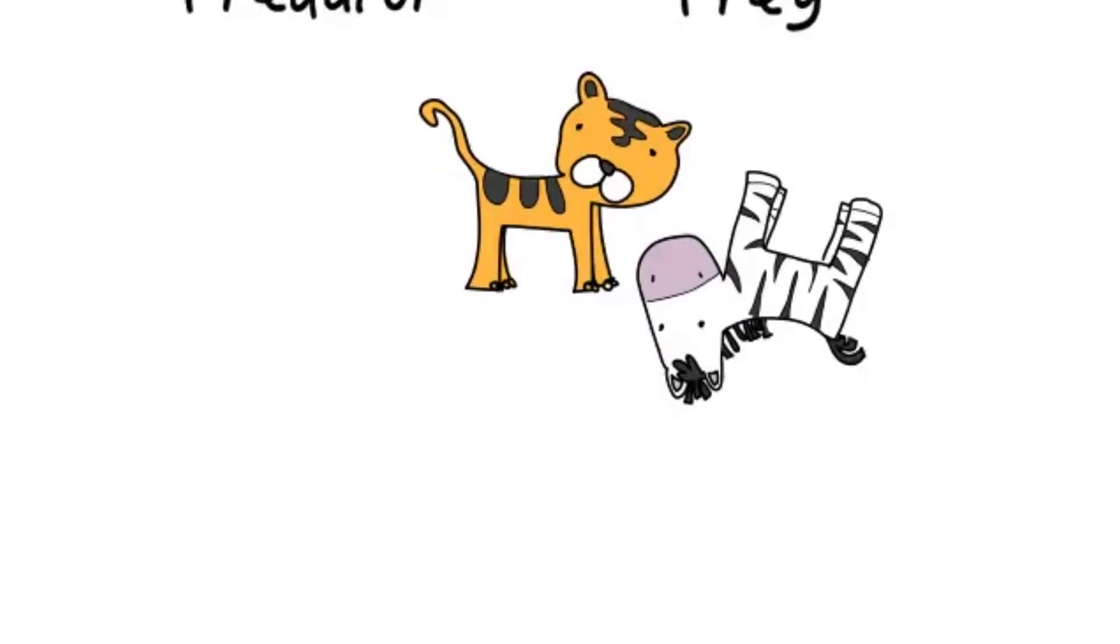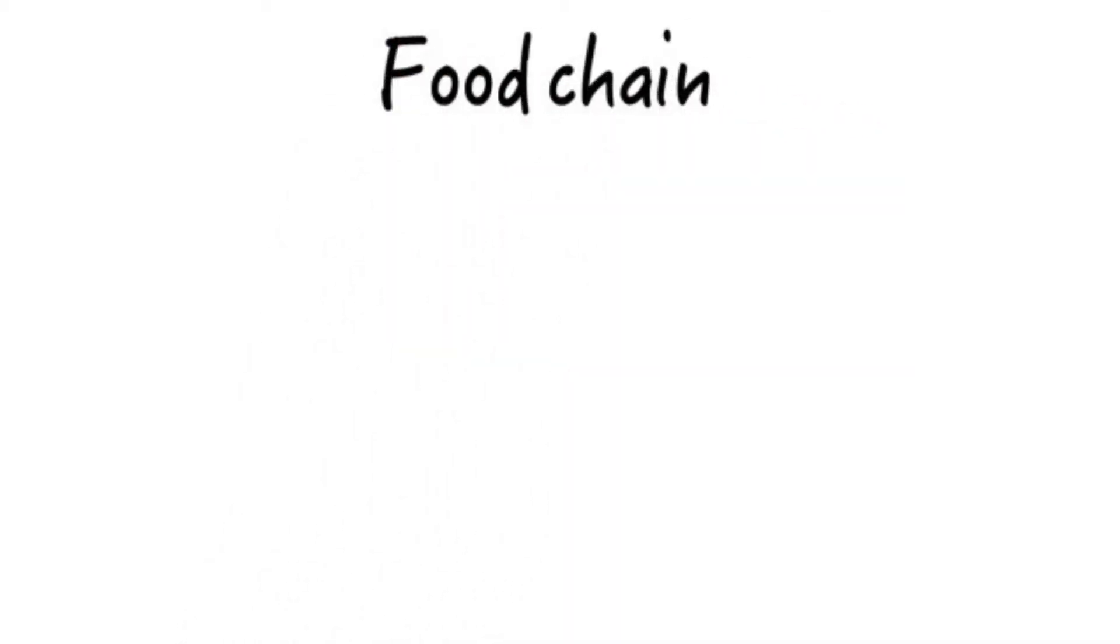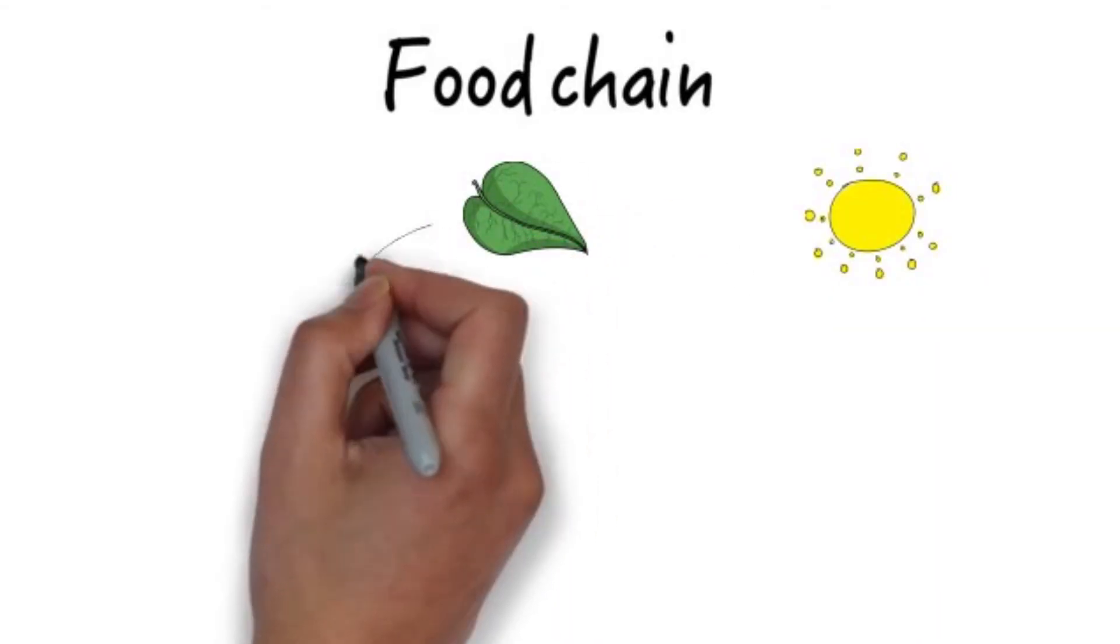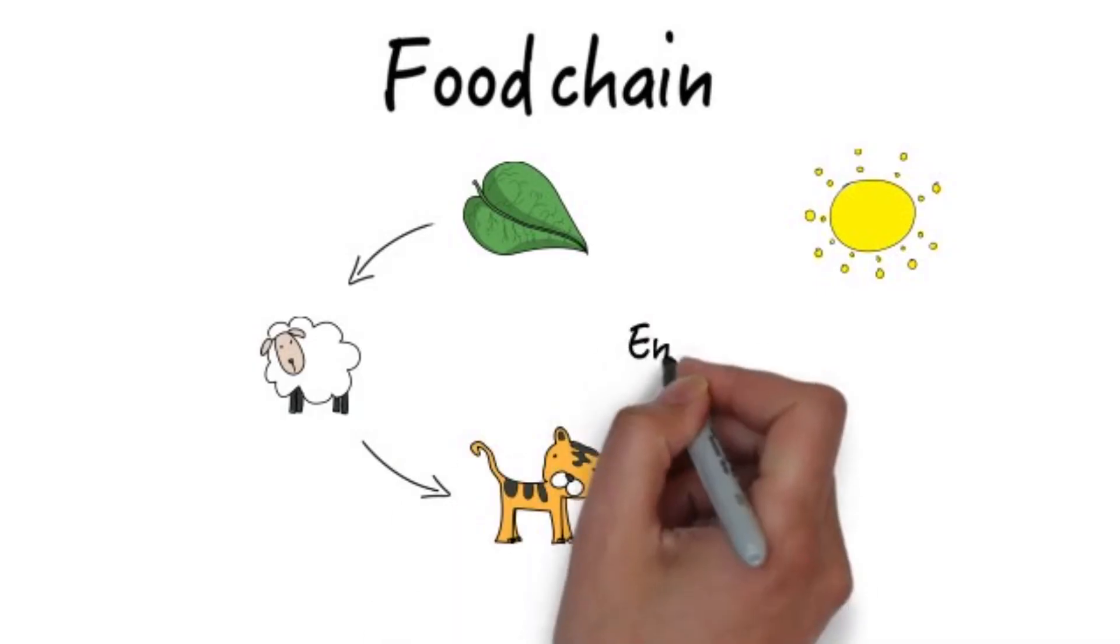The transfer of energy from the sun through plants to animals is called a food chain. It always starts with a plant, followed by a herbivore, and then a carnivore that eats a herbivore.